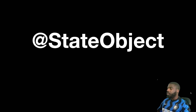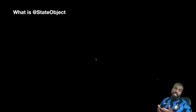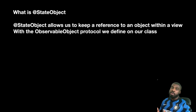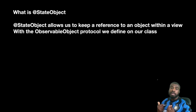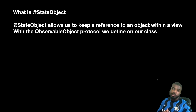So what is state object? Essentially, @StateObject is a property wrapper that allows us to mark our objects which conform to ObservableObject and maintain a reference to those objects within our views.